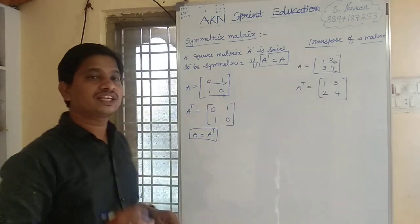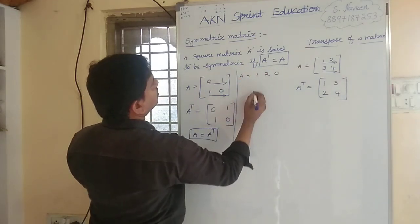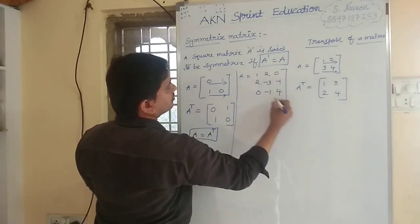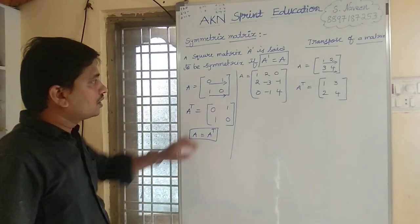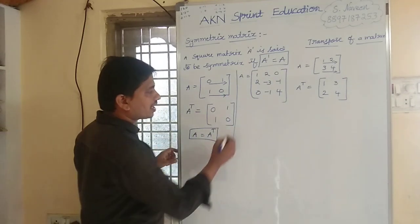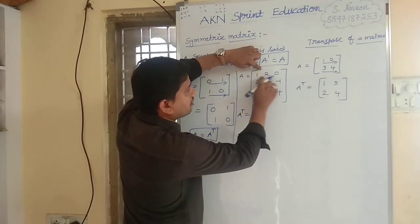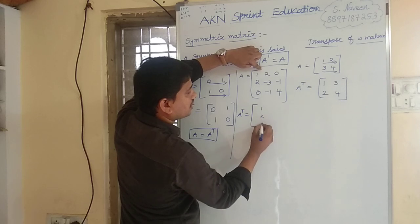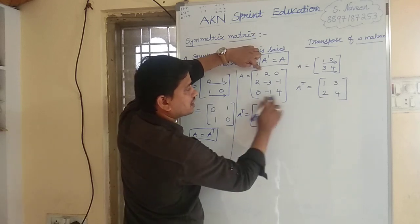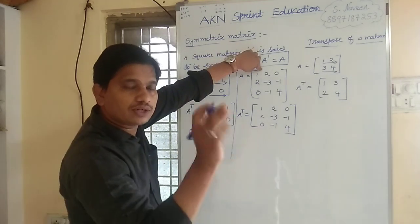Consider one more example. A equals 1, 2, 0 / 2, minus 3, minus 1 / 0, minus 1, 4. Let us find A transpose. The first row will become the first column, the second row will become the second column, and the third row will become the third column.